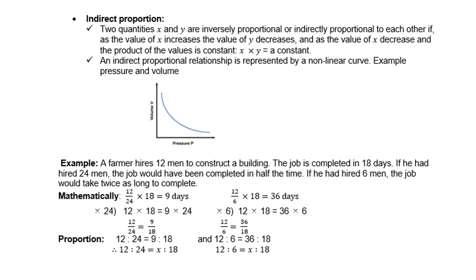An indirect proportional relationship is represented by a non-linear curve. Look at the example there. If you compare volume to pressure, then you know, we all know, it is indirect. If you lower pressure, the volume increases. So that is how it works indirectly.